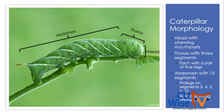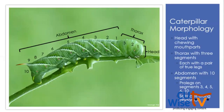On some caterpillars it's difficult to count all the abdominal segments. We can find prolegs — extra gripping features — on segments 3, 4, 5, 6, and 10 of the abdomen, though this isn't the case for all caterpillars. Some only have a few prolegs. Inchworms, for example, don't have prolegs on segments 3, 4, 5, and 6, so checking the number of prolegs can be a helpful identification feature.